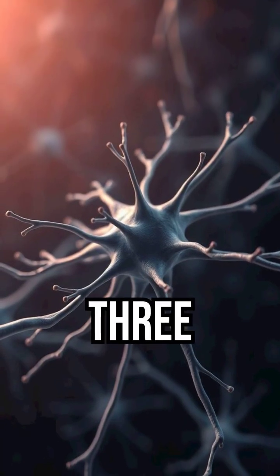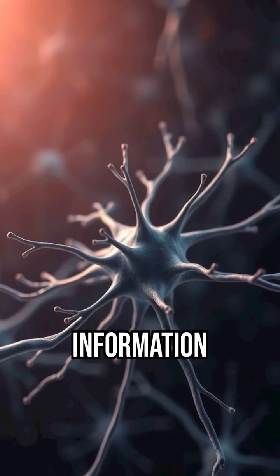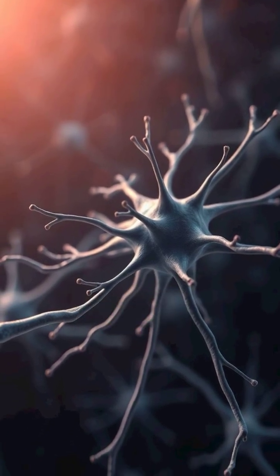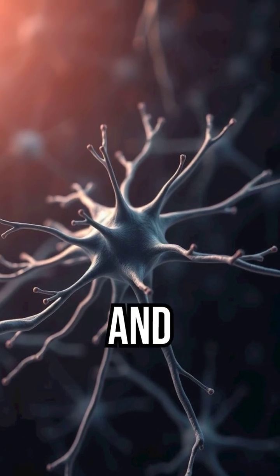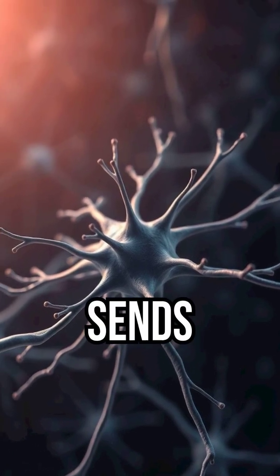Each one has three main parts: dendrites, they receive information; a cell body, it processes the signal; and an axon, it sends the message out, sometimes over long distances.